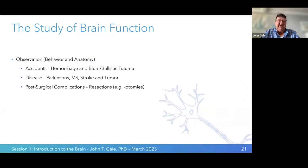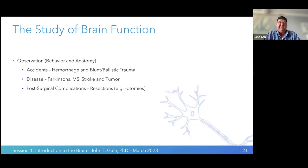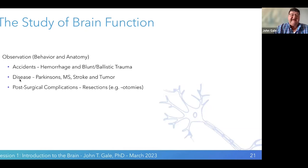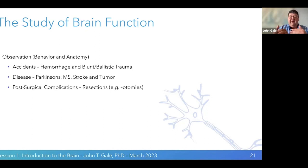Most of what we did in the past to study the brain was observation. A patient had a hemorrhage, blunt trauma, or a disease such as Parkinson's, MS, stroke, or tumor, and we would look to see how it changed the patient's behavior. There may also be post-surgical complications — we would go in to save a patient's life, and when they woke up, they didn't have memory, for instance — and we would start to understand what different parts of the brain actually do.